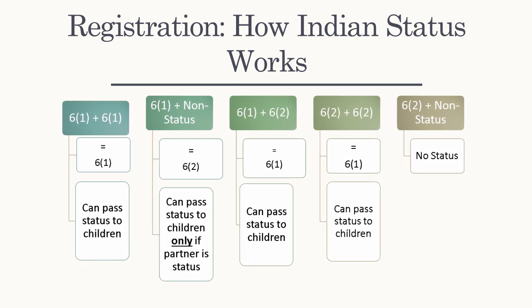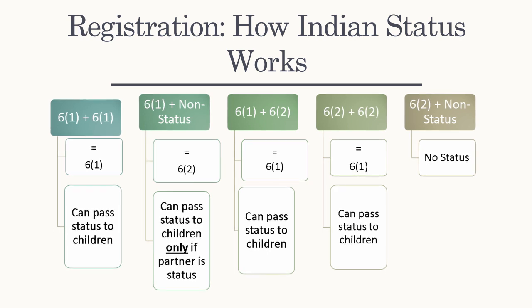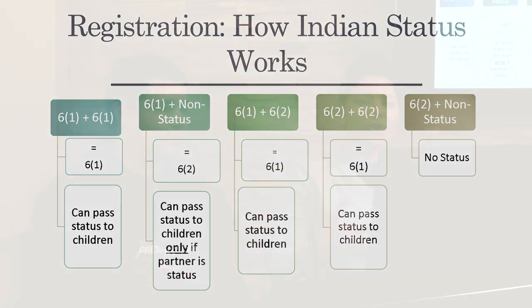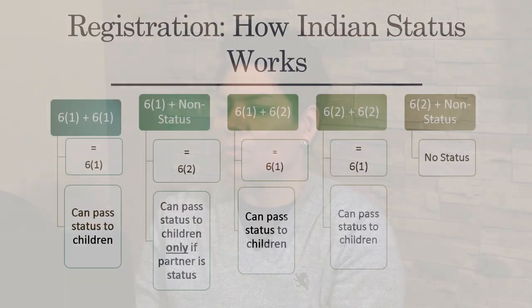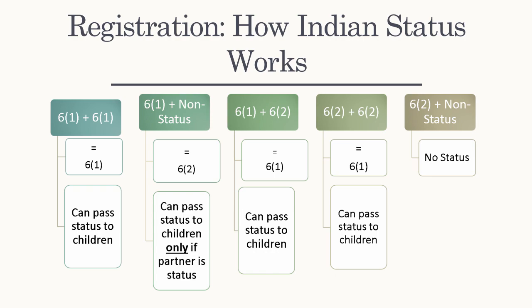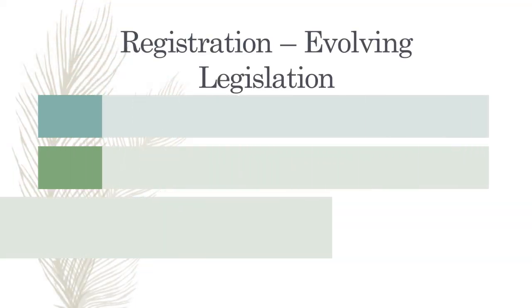Now we'll look at a chart showing how registration works in terms of status. A 6.1 who has a child with another 6.1 produces a 6.1 child who can pass status on. A 6.1 with a non-status partner produces a 6.2 child, who can only pass status if their partner is also status. A 6.1 and 6.2 together make a 6.1 child. Two 6.2 parents produce a 6.1 child. But a 6.2 with a non-status partner — for example, an Onkwehon:we from the United States not recognized as a status Indian — would not have status under the Indian Act.